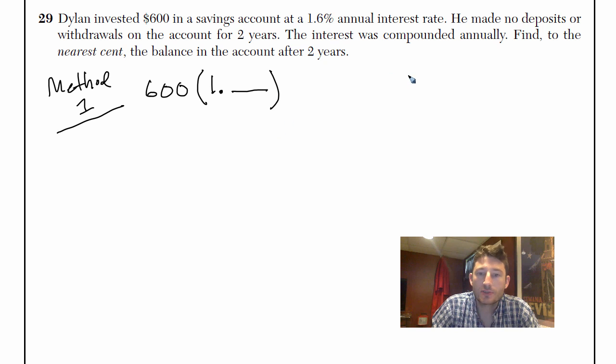So since it's 1.6%, we have to convert that to a number without the percent sign. The percent sign tells you move the decimal place over one, two spots. So that's 0.016. That's what you're putting in here.